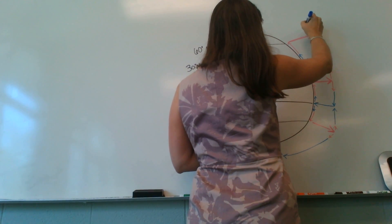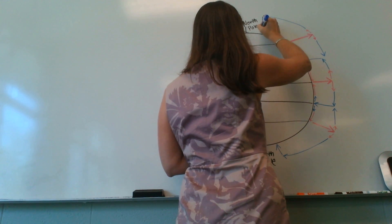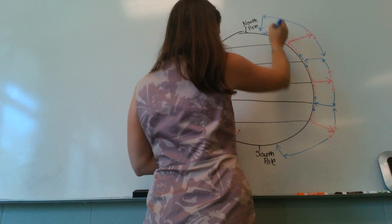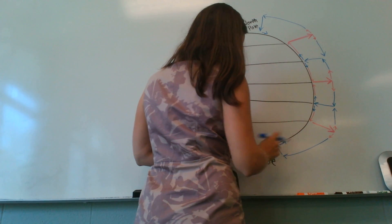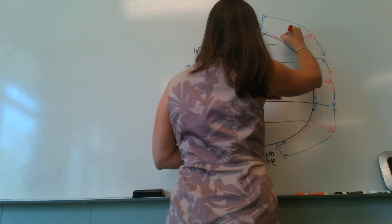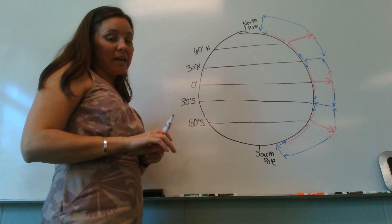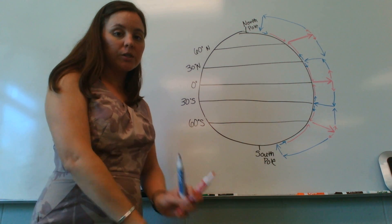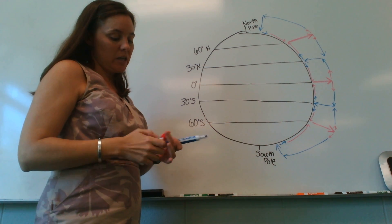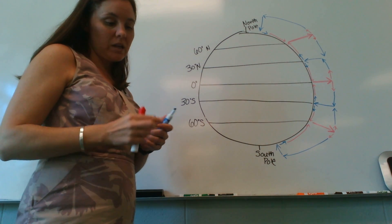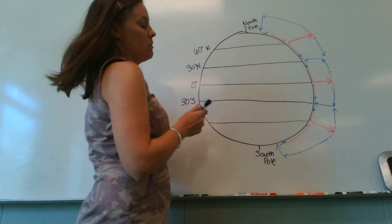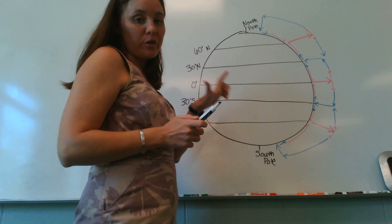Traveling across the troposphere, cooling down, and creating an area of high pressure again, because those air molecules are pushing down. It travels over the surface of the Earth, starts to travel and heat up a little bit. So this is what's happening from the surface of the Earth all the way up to the top of the troposphere — we have convection cells of heating and cooling. These convection cells have names: from 0 to 30 degrees, these are called Hadley cells.